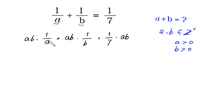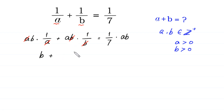Now, this a will be cancelled with this a, and this b will be cancelled with this b. So b plus a is equal to ab over 7.